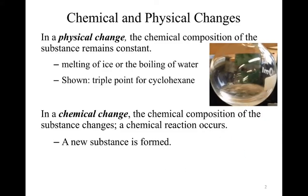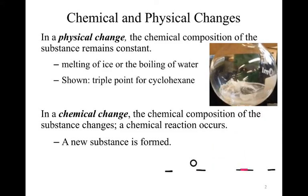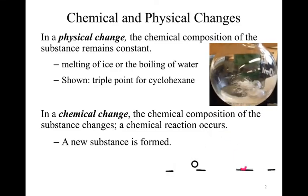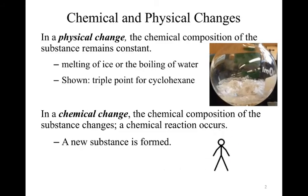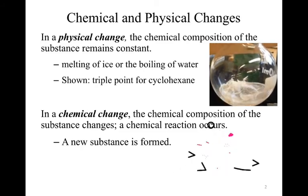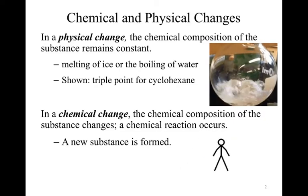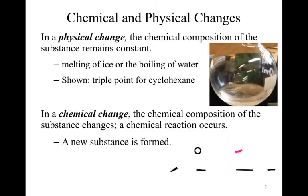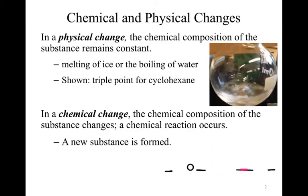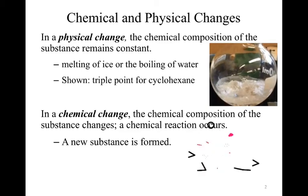When we look at a chemical change, the chemical composition of the substance changes. We have a new substance. So if we look at our unfortunate GIF man, when he explodes, we now have all the individual pieces of him. We don't actually have him anymore. So we've changed the connectivity between those individual pieces, and we now lose some of that chemical nature of the original man.